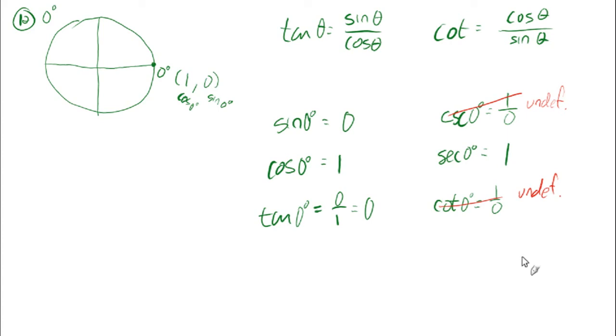So there you go — just look at your unit circle to find these values, and knowing that the tangent is sine over cosine will help quite a bit.